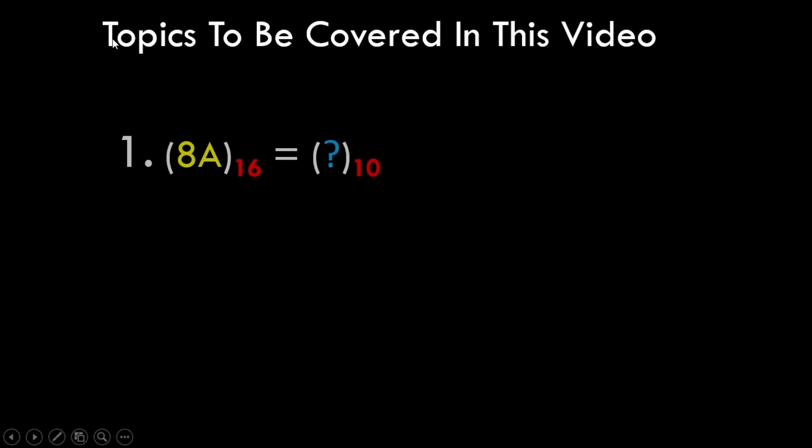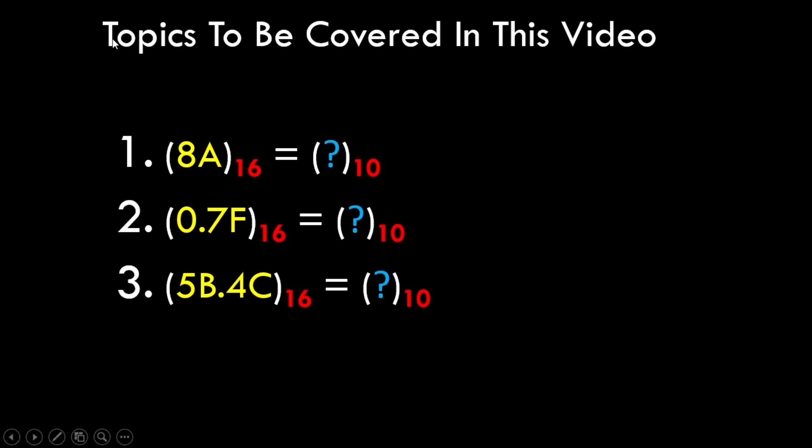In this video tutorial we will be solving three different problems wherein we have three different hexadecimal numbers which need to be converted to decimal numbers. The first one is a plain integer hexadecimal number without a decimal point. The second one is a fractional hexadecimal number that has a decimal point, and the third one is a combination of the first and second. So before we start solving problems, let's have a look at the conversion table between decimal and hexadecimal values.